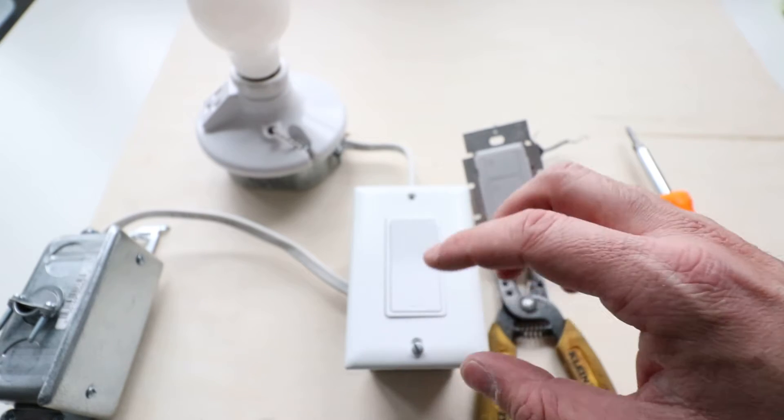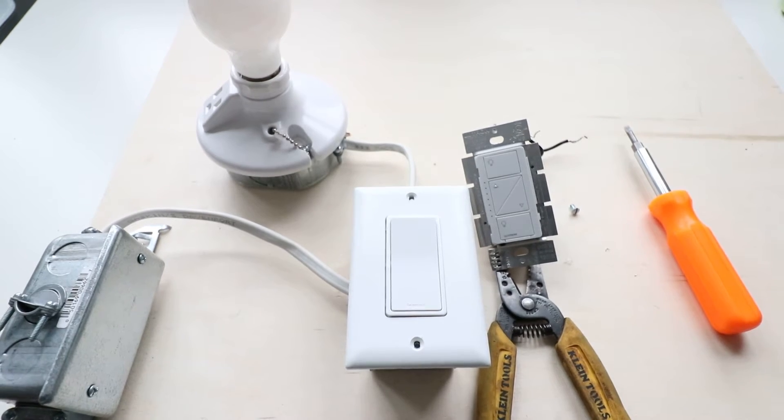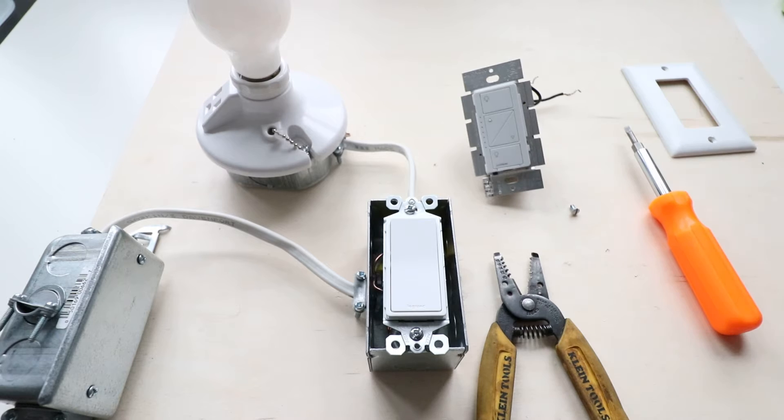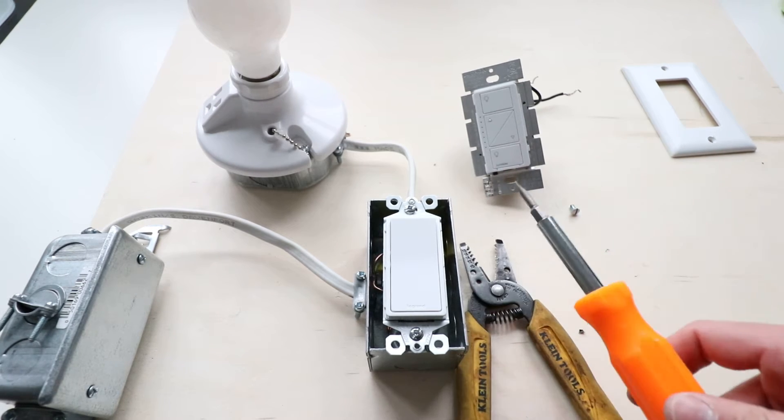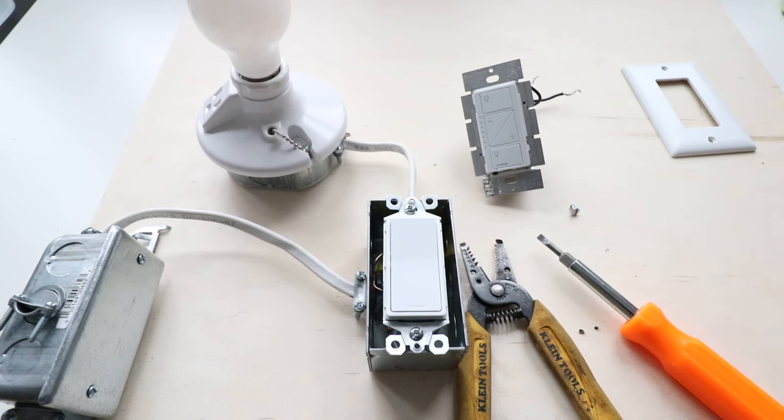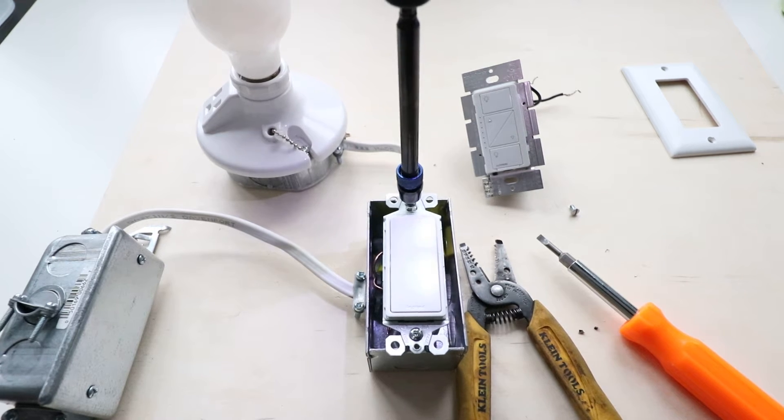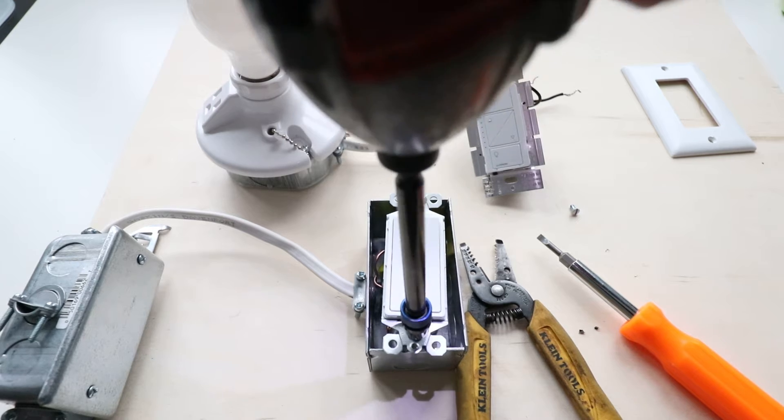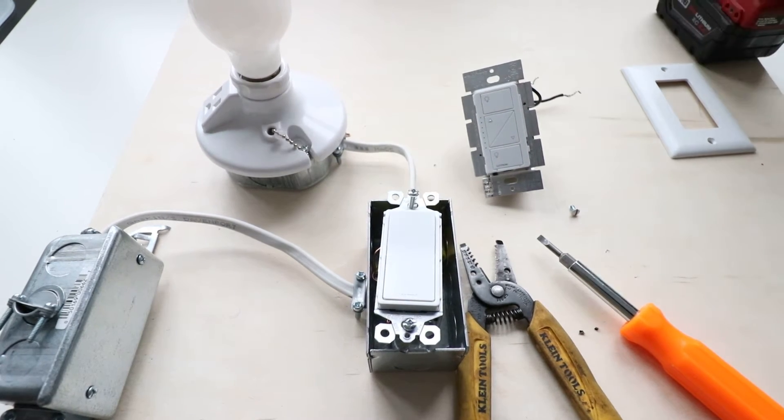Next thing we're going to do when the power is off is remove the light switch cover plate. You're just going to pull this out. The one thing about doing a light switch is it really doesn't take many tools. You've got a wire stripper here and a screwdriver, really all you need. Now we're going to remove the light switch from the electrical box. I'm just going to use the drill because it's quicker, and pull this out.